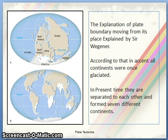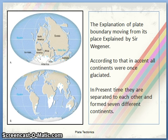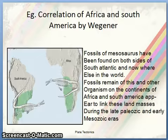This was explained by Sir Alfred Wegener in 1912. According to his theory, all continents were once joined together and glaciated; in the present time they are separated from each other, forming seven different continents.